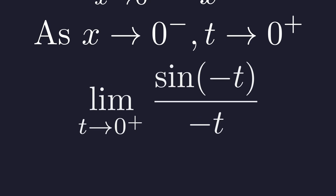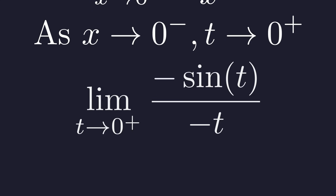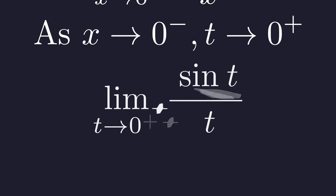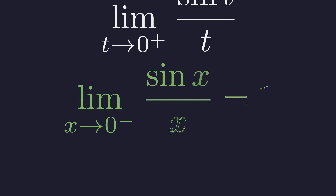Now we use a key property of the sine function: it is an odd function, meaning sine of negative t is equal to negative sine of t. This substitution makes the negative signs in the numerator and denominator cancel out, leaving us with the limit of sine of t over t as t approaches zero from the right — which is the exact limit we already proved is equal to one. Therefore, the left-sided limit is also one.